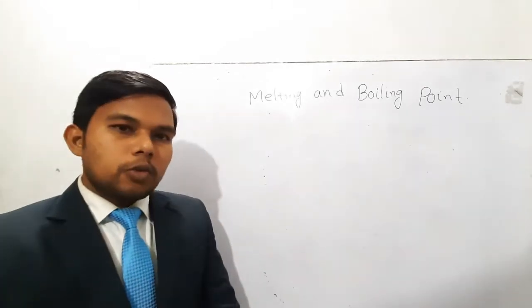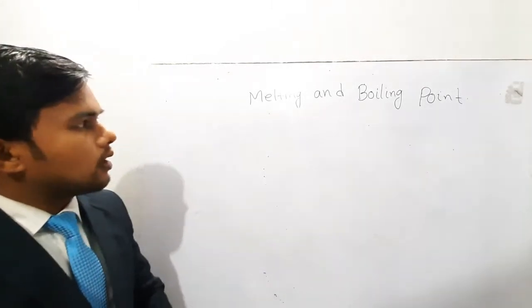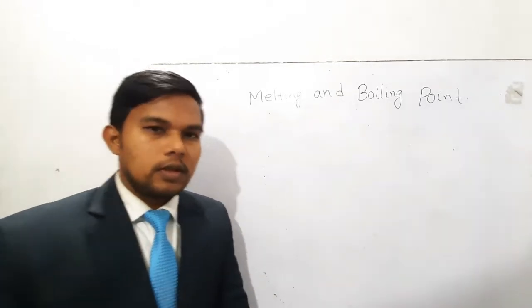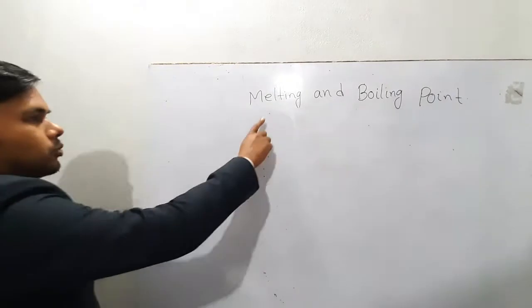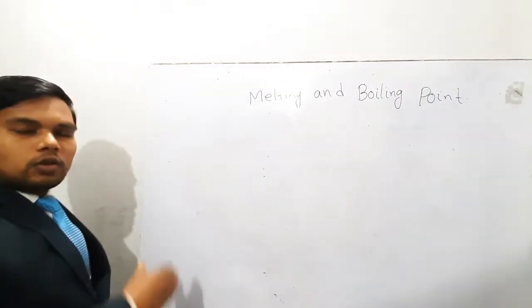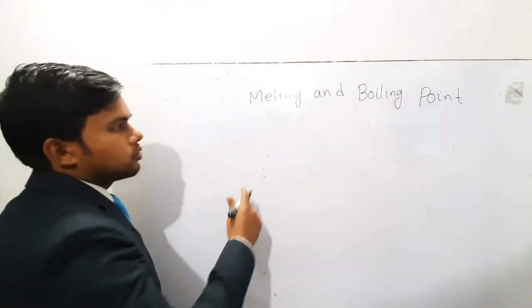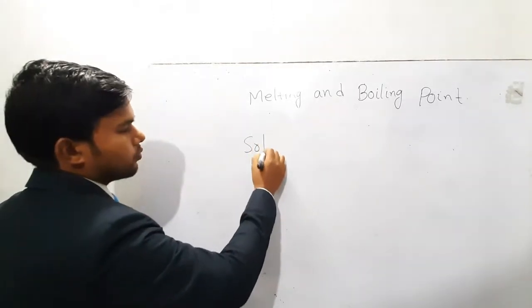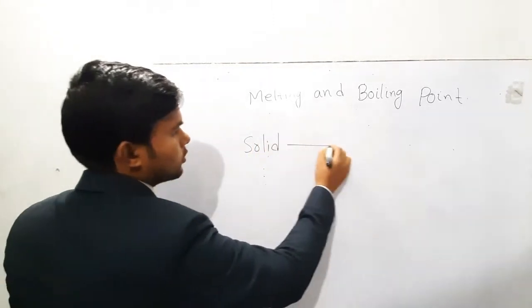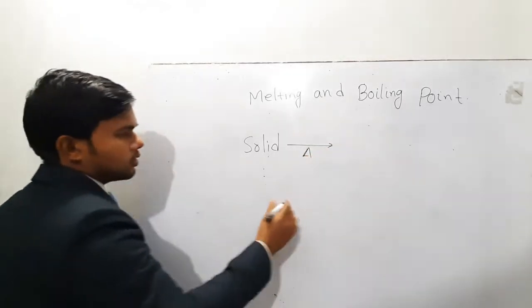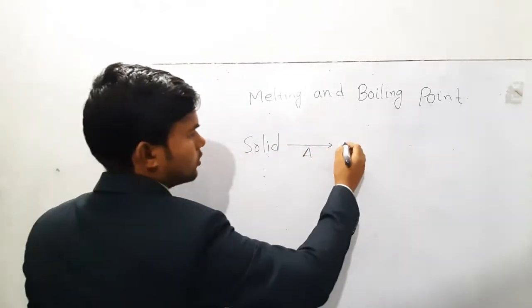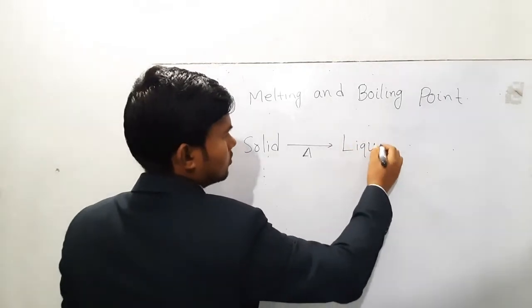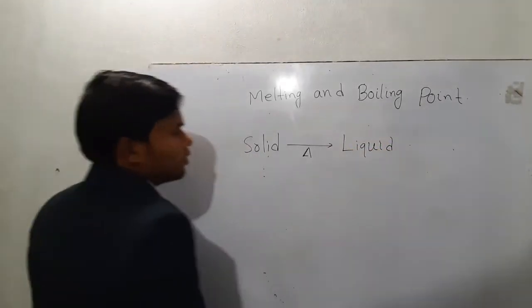First I would like to give you the definitions of melting point and boiling point, then we will discuss how we determine the melting and boiling point of a substance. Melting is the process where a solid substance starts to melt — when heat is applied on a solid substance, it converts to liquid.